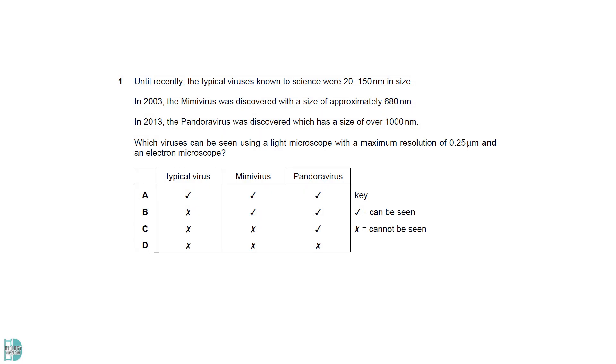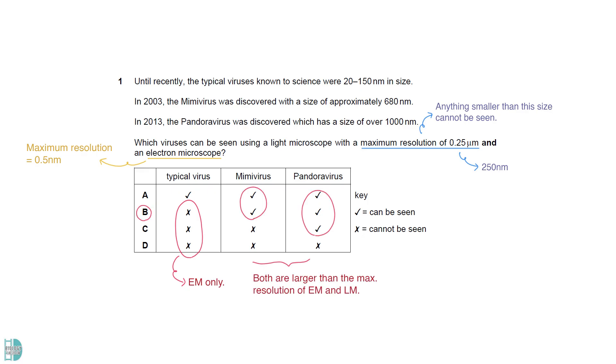A maximum resolution of 0.25 micrometers means that anything smaller than this size cannot be seen under this light microscope. 0.25 micrometers is equal to 250 nanometers. An electron microscope has a maximum resolution of 0.5 nanometers. Typical viruses can be seen under an electron microscope, but they are smaller than the maximum resolution of the light microscope. Mimivirus and Pandoravirus are larger than the maximum resolution of both microscopes.